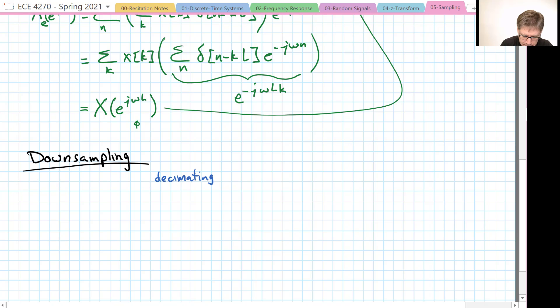Decimating is throwing away samples. So if we are going to decimate by a factor of 4, that means we keep one sample out of every 4. A decimator looks like it has a down arrow and then the factor.